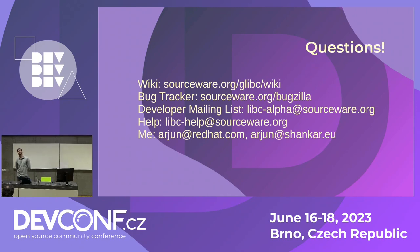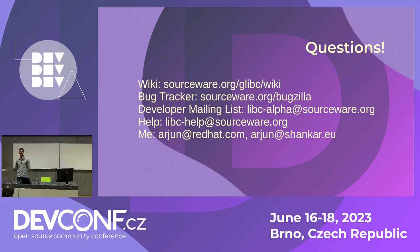There are over 1,000 commits a year — I checked — so development is happening. A lot of contributors tend to be full-time employees of software companies in this field. It's a hard problem. glibc is also not as glamorous as the kernel. I don't know the solution, but you're right — it is harder to attract contributors here than to some other projects.